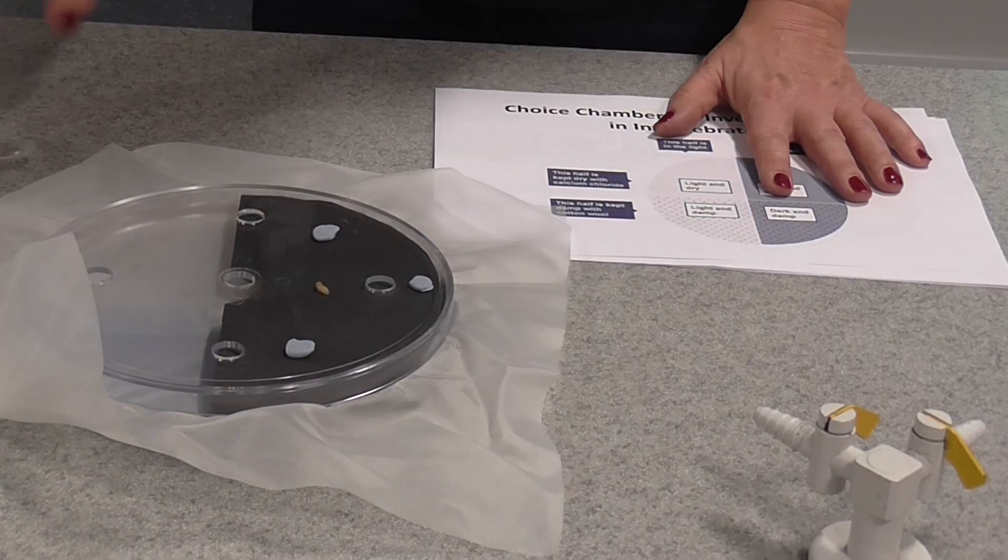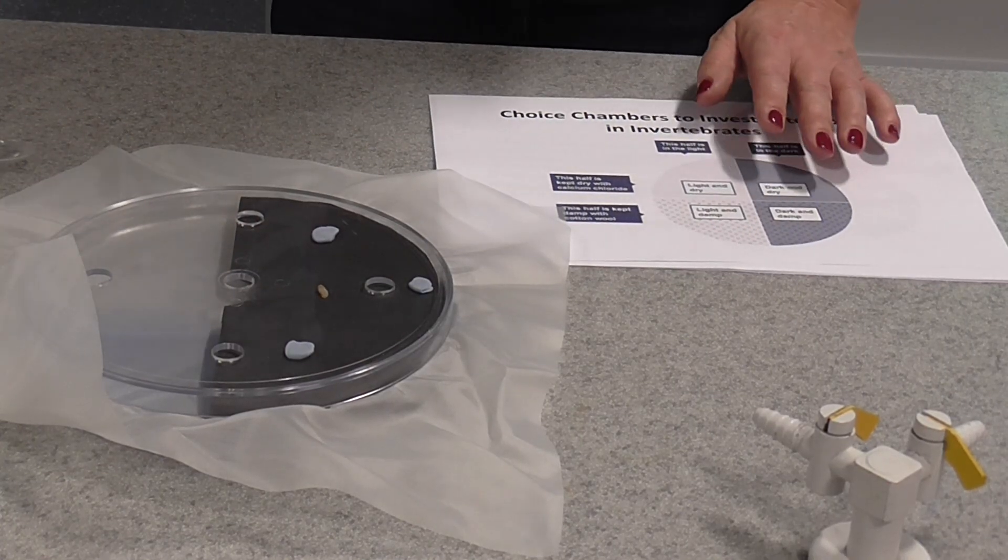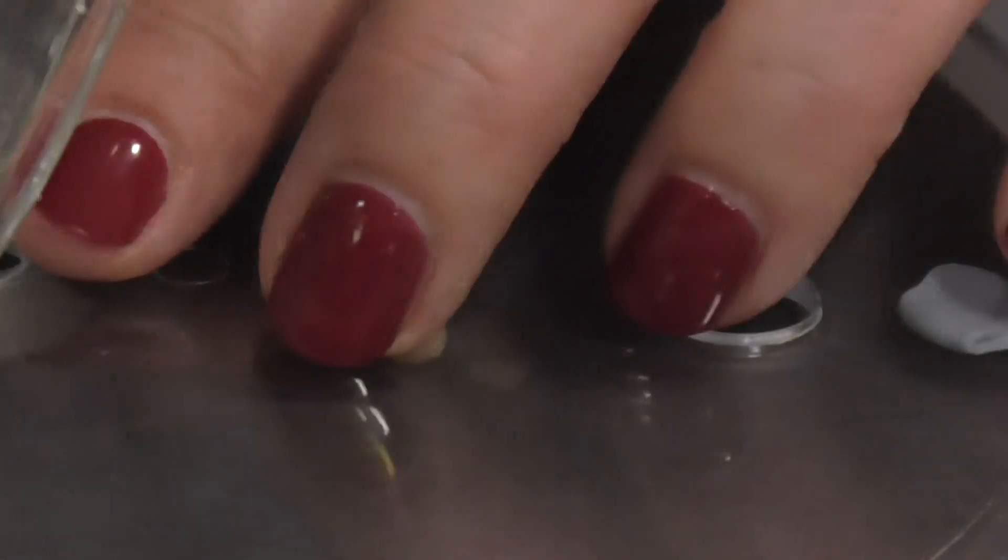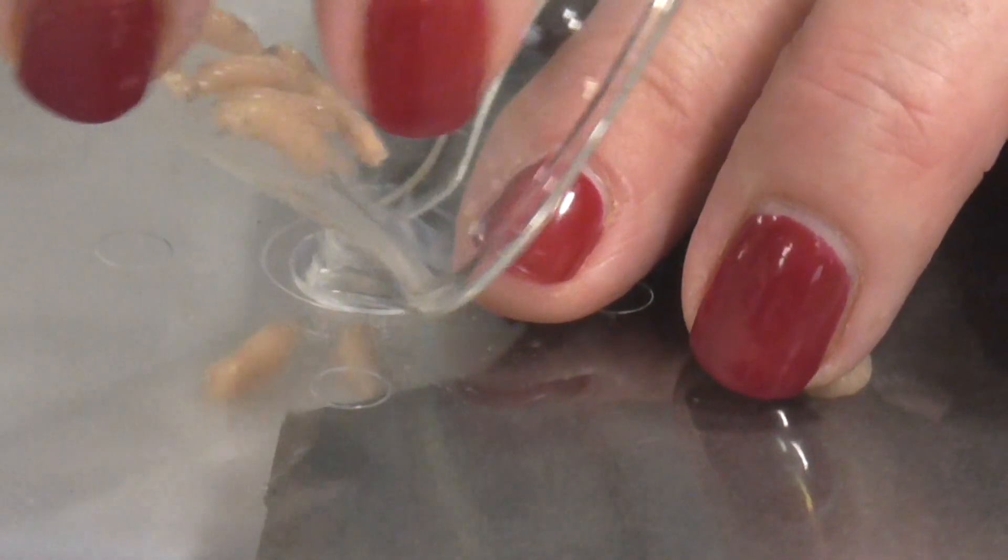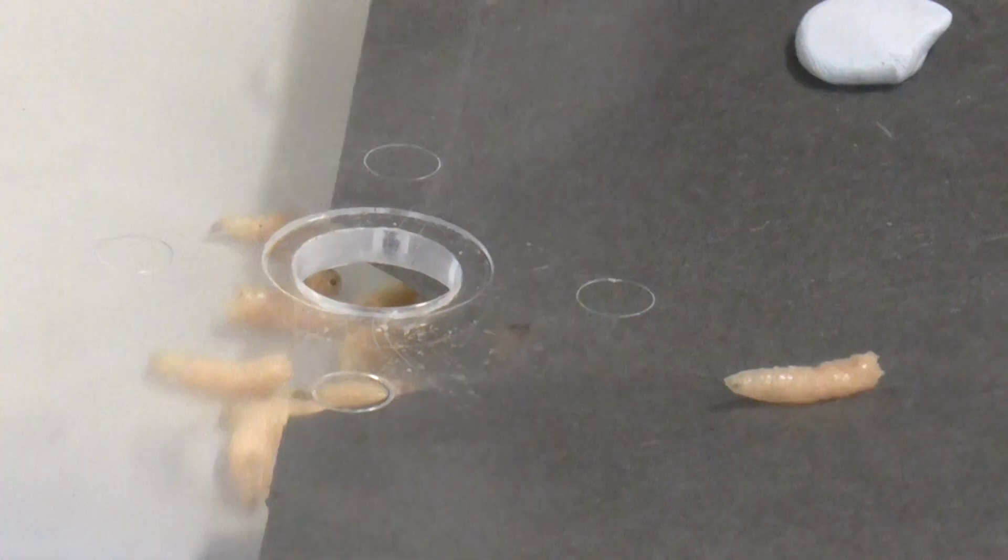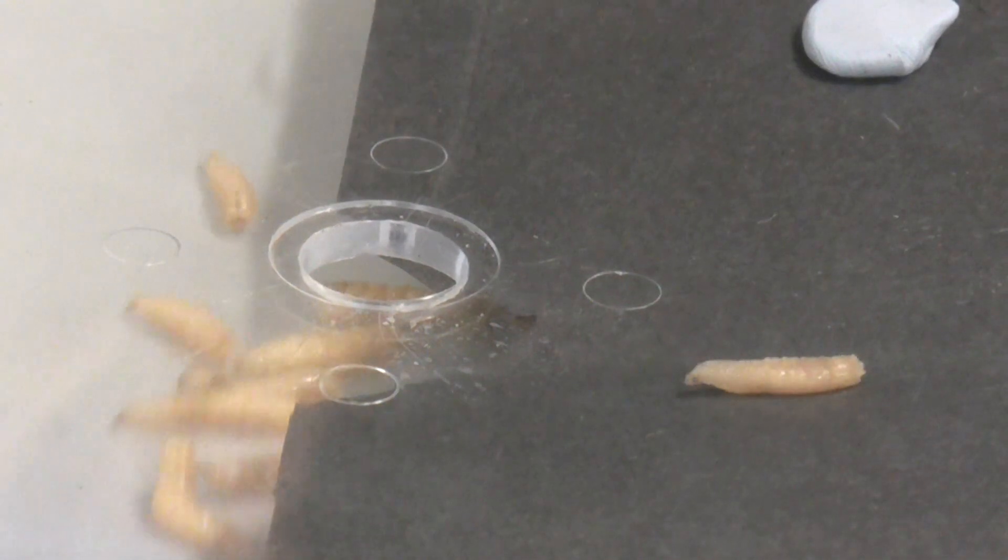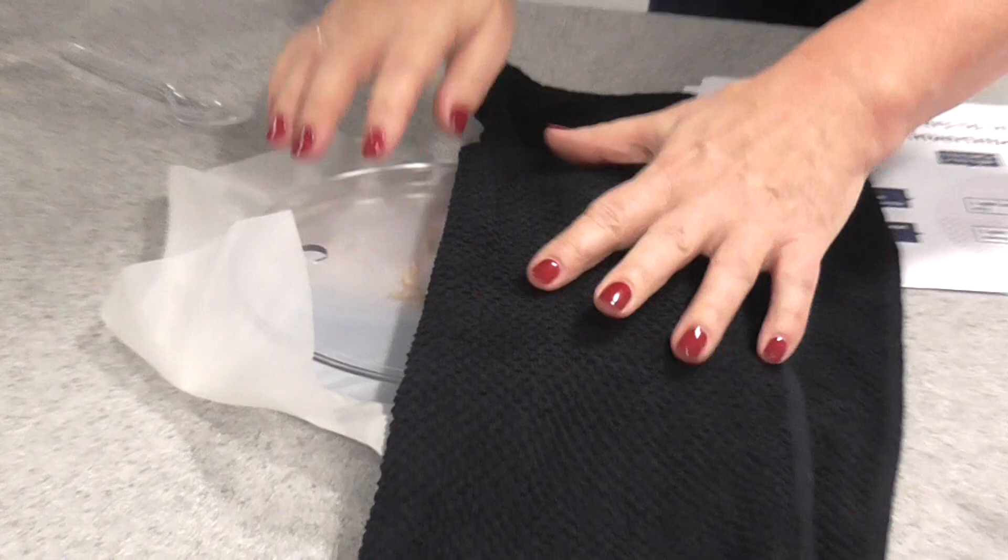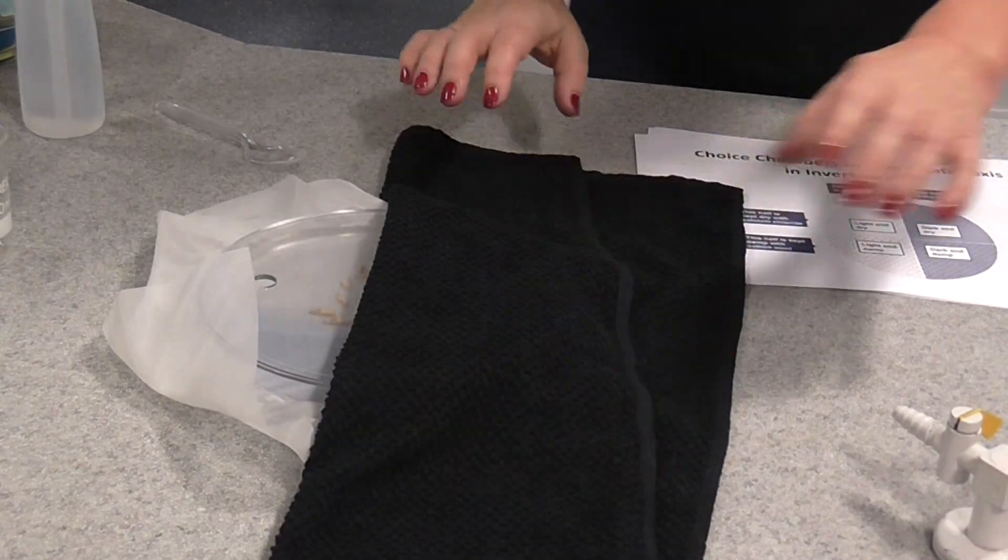Now then, the next thing we're going to do, we're going to place 20 maggots or wood lice into the central little hole there into the choice chamber. Just to make sure that the dark sections are in darkness here, I'm going to cover half of it with a dark cloth like that to keep the light out.